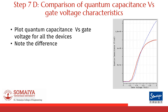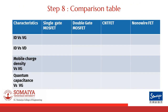Hence, plot quantum capacitance versus gate voltage for all the devices. Once you have plotted and observed the characteristics, you will be able to fill in the comparison table shown.